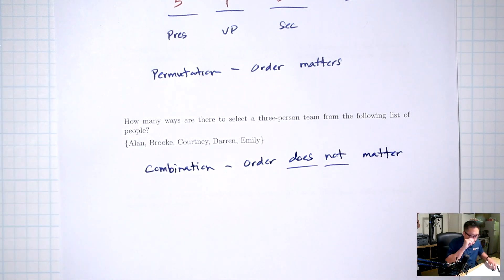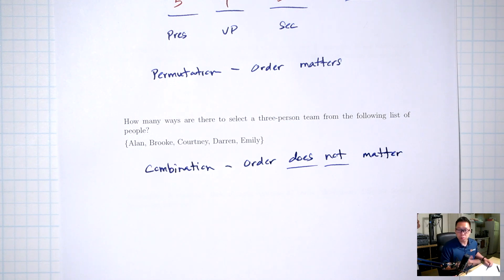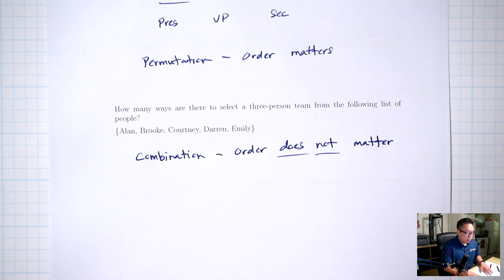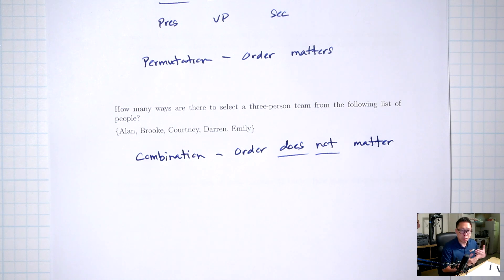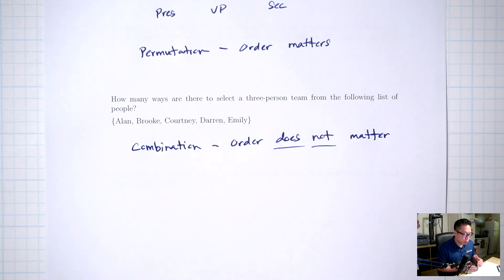Today we're going to continue on with counting. I have two scenarios here that sound very similar. The first one: how many ways are there to select a president, a vice president, and a secretary from the following list of people? The second scenario: how many ways are there to select a three-person team from the same list of people?